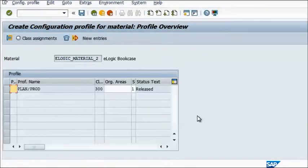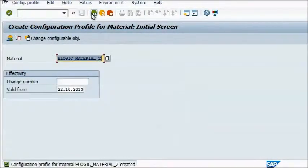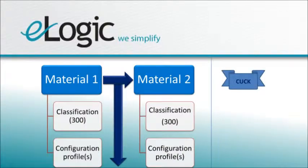What you could do, instead of using these three transactions, is use transaction CUCK, which is really a 3-in-1. It would create the material, its classification, and its profiles in one shot.